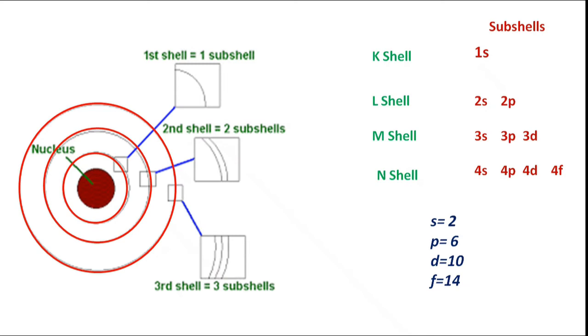S subshells hold two electrons. P subshells can hold maximum six electrons. D subshells can hold maximum 10 electrons. F subshells can hold maximum 14 electrons.